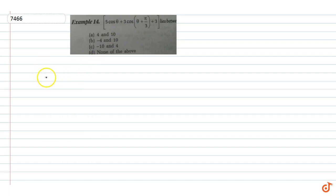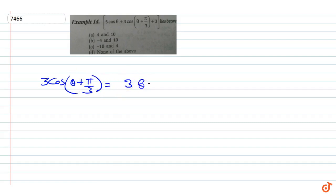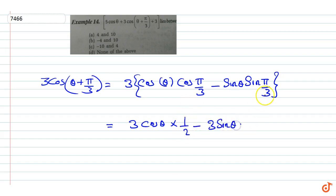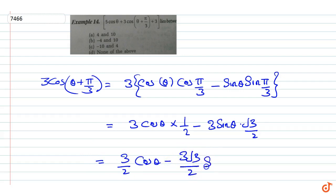3cos(θ + π/3) equals 3cosθ·cos(π/3) minus sinθ·sin(π/3). This is equal to 3 into cosθ into 1/2 minus 3sinθ into √3/2, which equals 3/2·cosθ minus 3√3/2·sinθ.